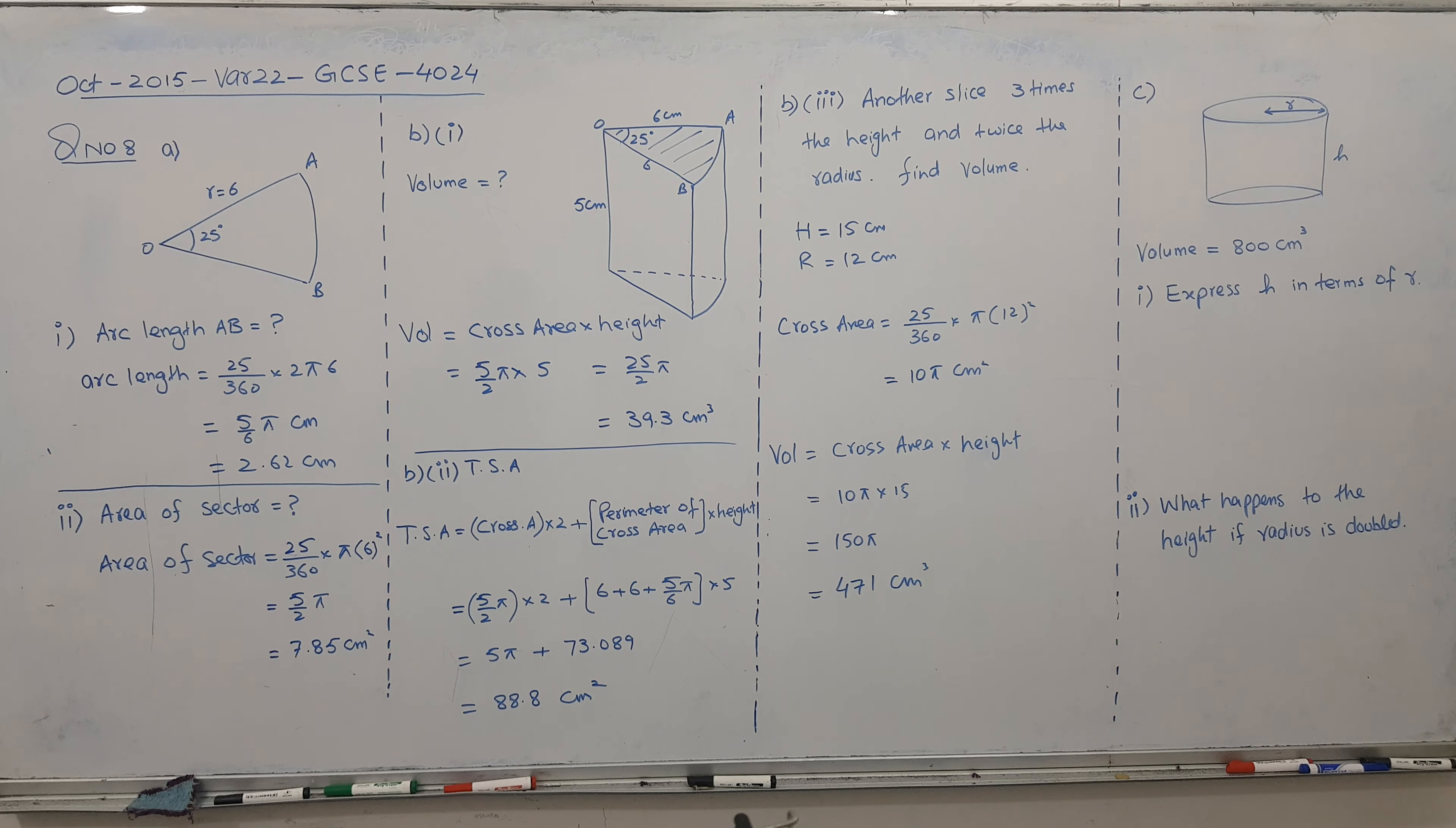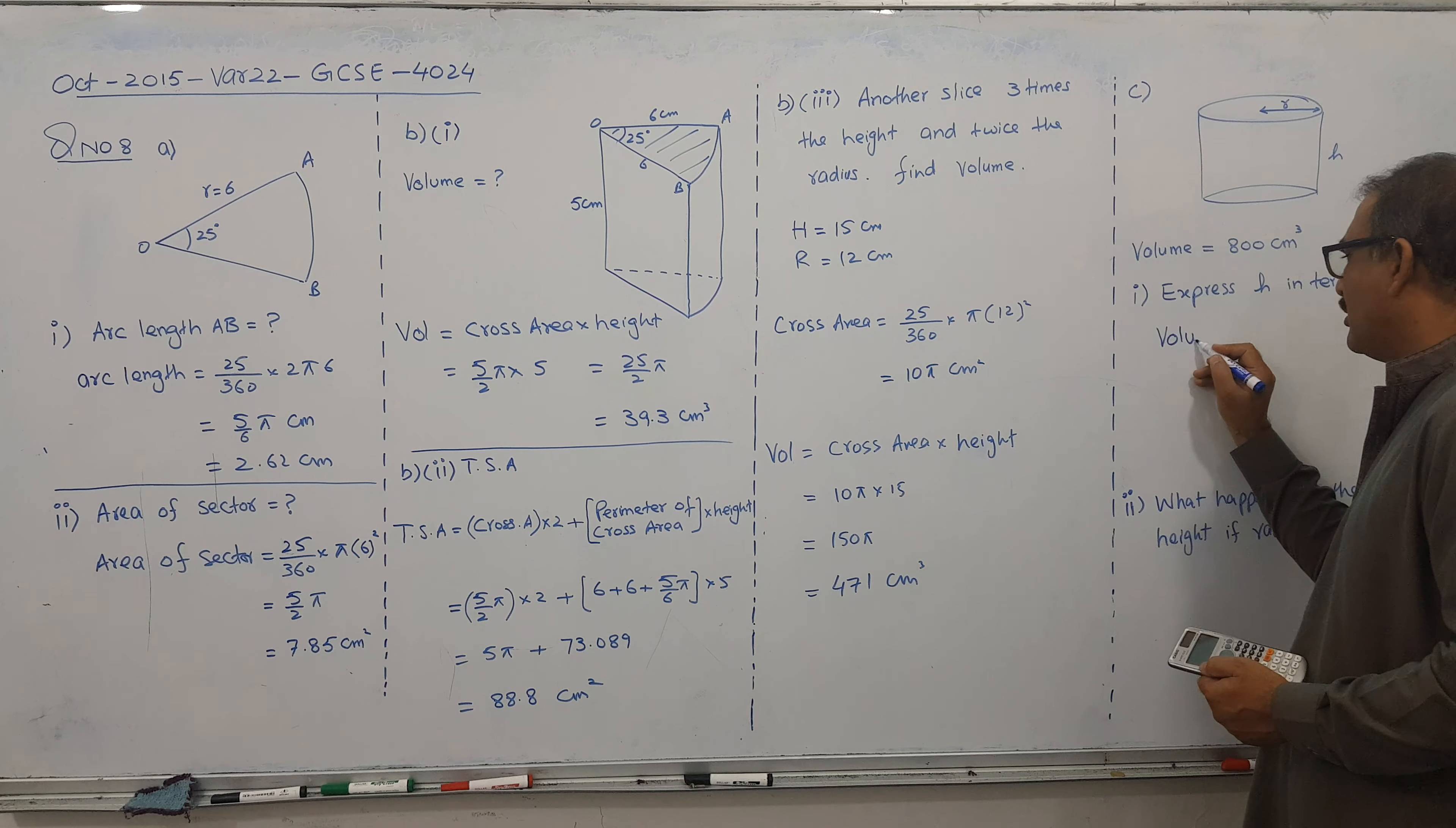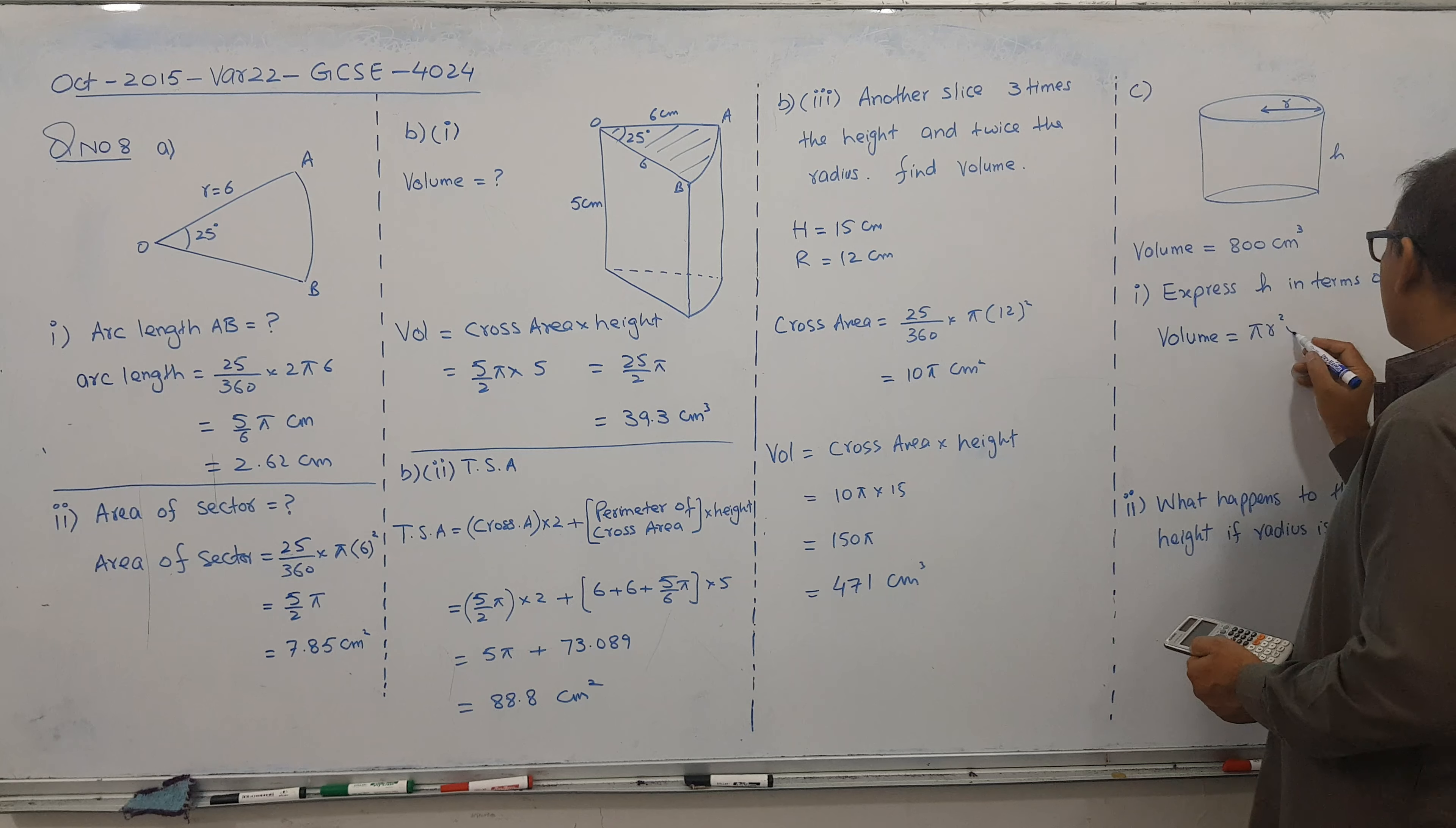So let's go for the last part C. So C part is, it said the volume is 800 express height. So what is the volume of cylinder formula? All of you know. So base area into height. Same. Cross area into height. Cross area. But what is cross area of circle? Circle area. Pi r square into height.